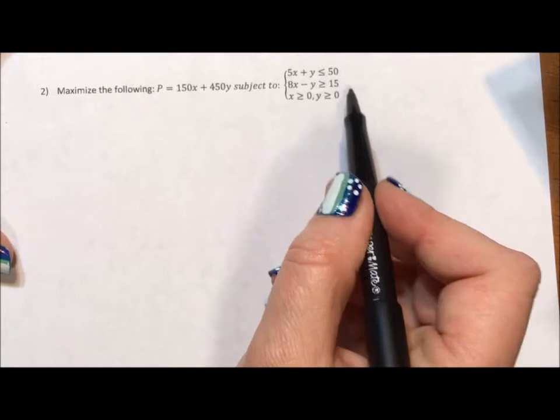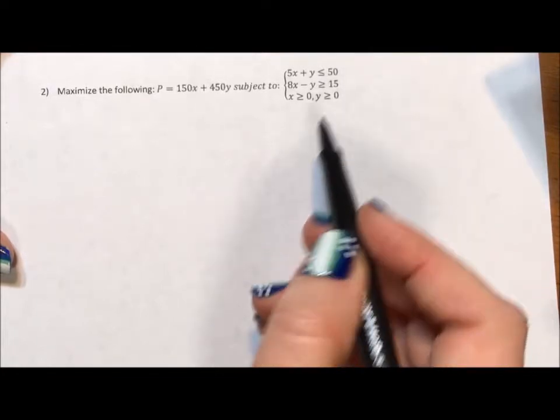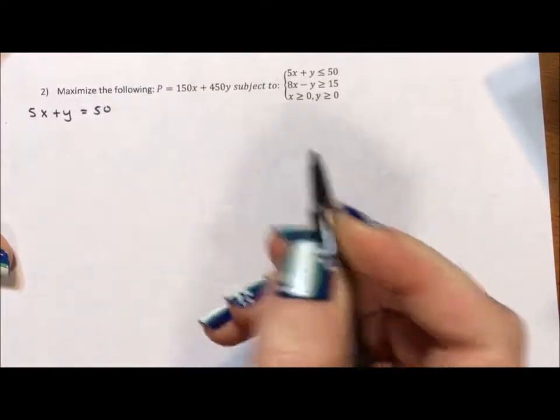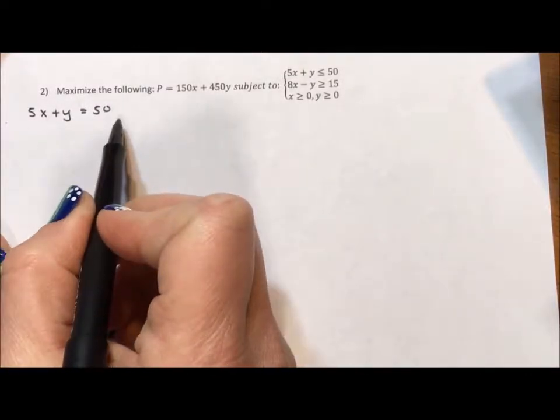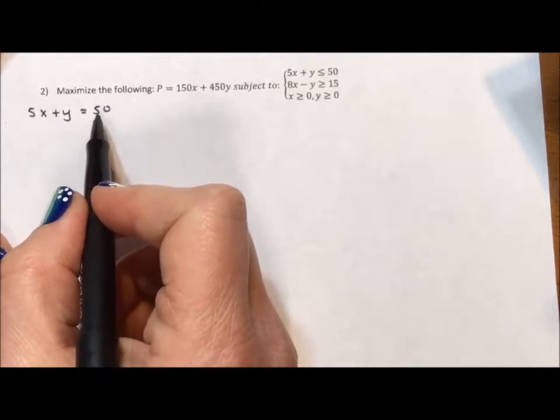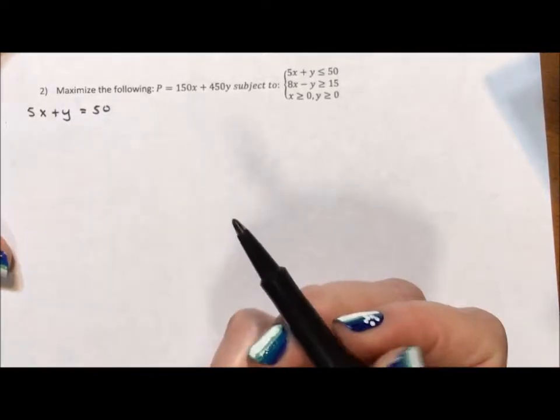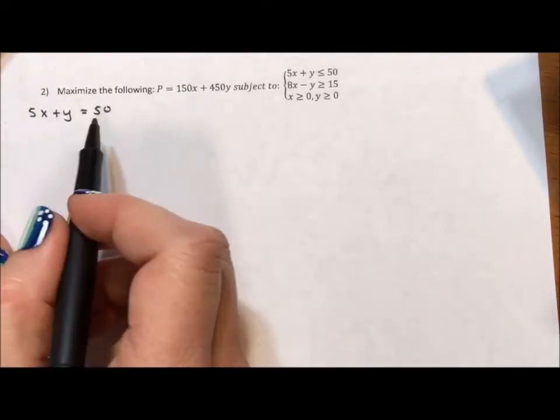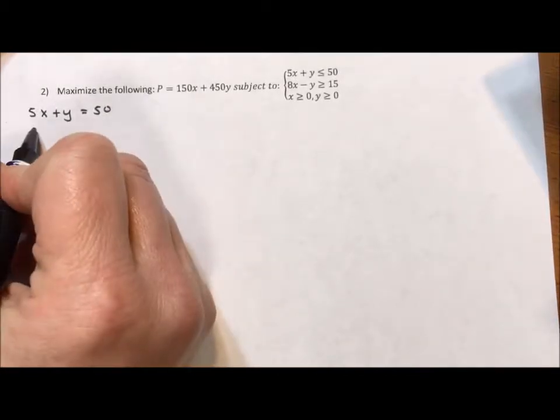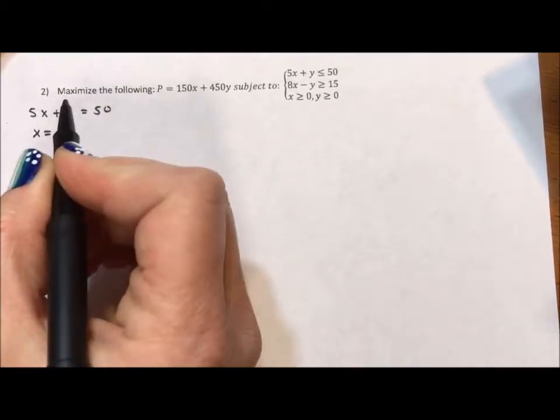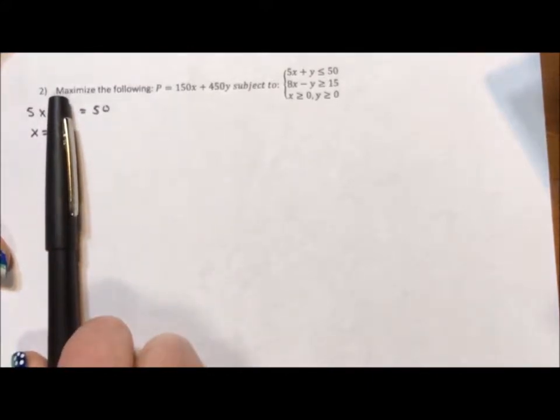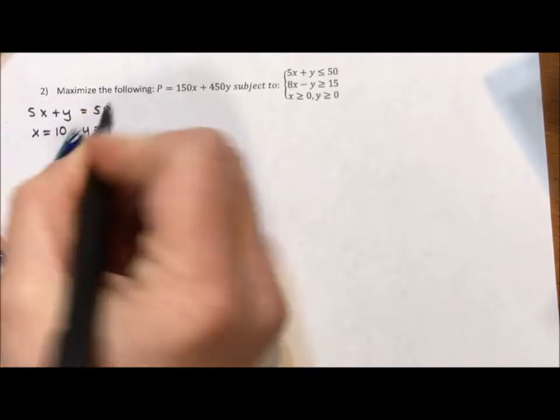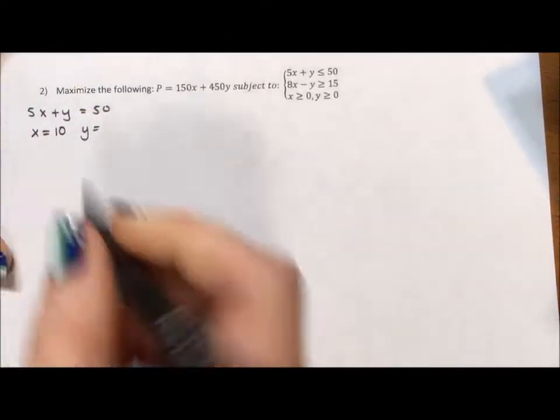To graph these inequalities, because the numbers are kind of large, I don't want to go to slope-intercept form. What I'm going to do for each of the equations is I'm going to graph the intercepts. Because right now what I'm doing is mapping out those intercepts, I don't need to worry about the inequality here. All I'm doing is trying to find where this line crosses the x and y-intercepts. So I want to find out where this line crosses the x-intercept and that happens when y is 0. If y is 0, then 5x equals 50 or x equals 10. Where it crosses the y-axis is when x is 0, which gives 50.